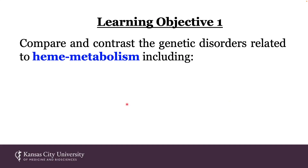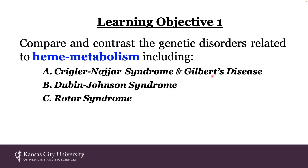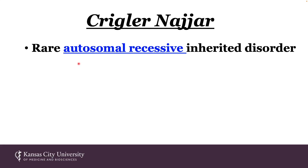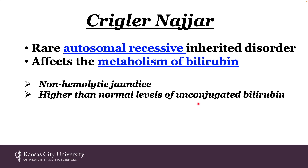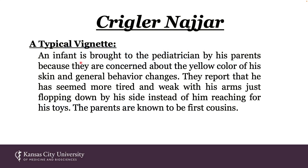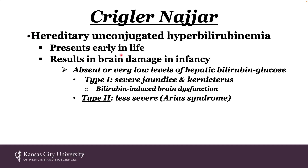With all of that information in mind, let's compare and contrast the genetic disorders related to heme metabolism, including Krigler-Nyar and Gilbert's disease, Dubin-Johnson syndrome, and Rotor syndrome. Krigler-Nyar is an autosomal recessive inherited disorder that affects the metabolism of bilirubin to produce non-hemolytic jaundice and higher than normal levels of unconjugated bilirubin in serum. This can cause kernicterus — brain damage in infants. A typical vignette: an infant is brought to the pediatrician because of yellow skin and behavioral changes — more tired, weak, arms flopping. The parents are known to be first cousins.